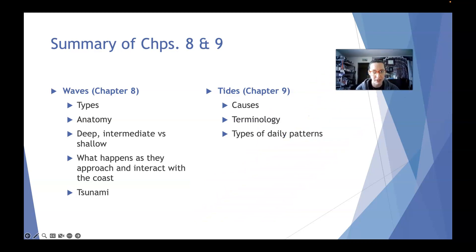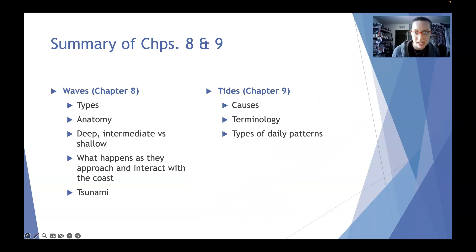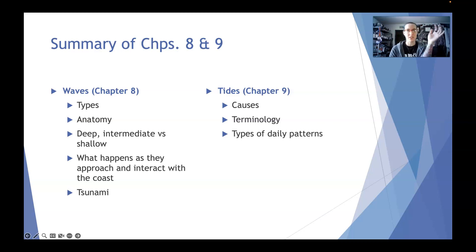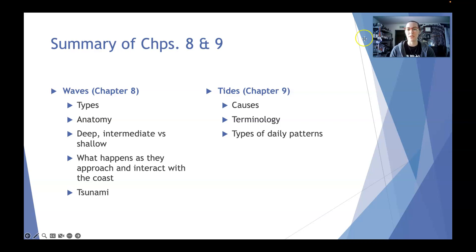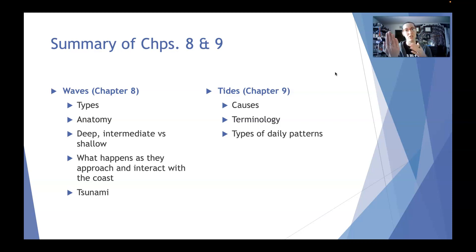To summarize the chapters we've covered most recently — chapter eight. We talked about waves: the different types, including capillary waves, storm waves, tsunami waves, and tide waves. We covered the anatomy — crest, trough, wavelength, wave height, steepness — and the breaking of waves, as well as deep versus intermediate versus shallow waves. We won't be doing any of the math in this class, but if you're in my lab, you will. We also discussed what happens to waves as they approach and interact with the coast, which we'll continue with in the coastlines section. And of course, tsunamis. Then we finished up talking about tides — what causes them, the moon and sun's gravitational pull, terminology for different tides, and the types of daily patterns: diurnal, mixed semi-diurnal, and semi-diurnal.